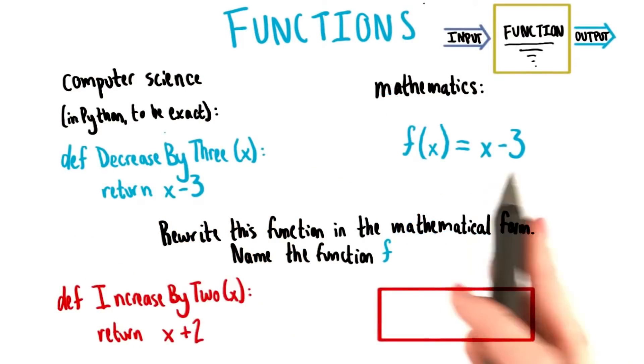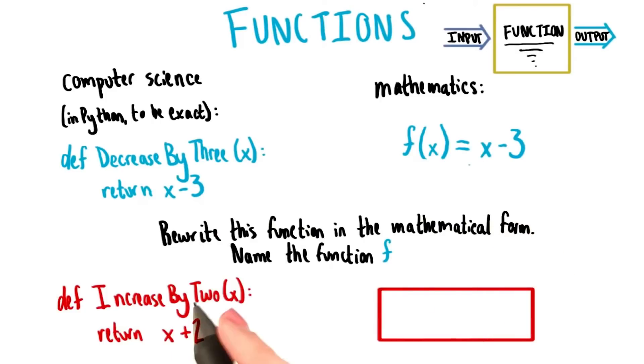Now that you've seen how both computer science and mathematics would represent the same function in different ways, I'd like you to translate the first function that we talked about from Python into its mathematical form. So this is the function that we initially called increase by 2. I'd like the input to be x and the output to be x plus 2. I'd also like you to name the function f. So just like we did up here, write the mathematical form of the function down in this red box.